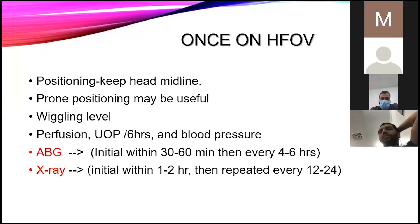Initial frequency is age-dependent: preterm babies 12–15 Hz, full-term neonates 10–12 Hz, children 8–10 Hz, adults 5–8 Hz. When shifting from conventional to HFOV: set MAP = conventional MAP + 2 cmH2O; start FiO2 at 100% (or same as conventional); set delta P = double the MAP or equal to the conventional PIP; set frequency according to age. Monitor closely after initiation — take care of head position (avoid ETT kinking), monitor wiggle level, and observe hemodynamics carefully.